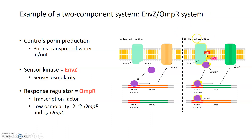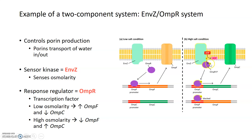When conditions outside the cell have high salt or high osmolarity, ENVZ as a sensor kinase senses that salt, autophosphorylates itself, and then passes that phosphate to its response regulator, the OMPR protein. When OMPR is phosphorylated, it is no longer able to promote OMPF, but is now able to promote the transcription of OMPC, turning it on and producing a narrower channel to reduce water loss to the external environment.